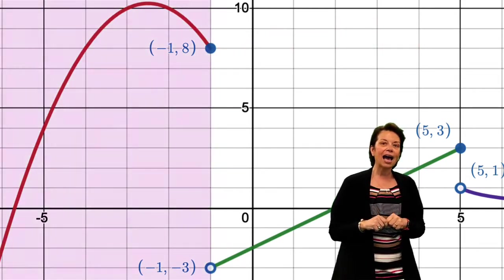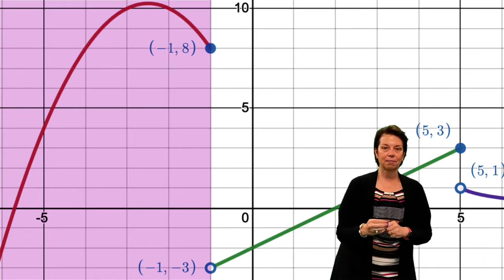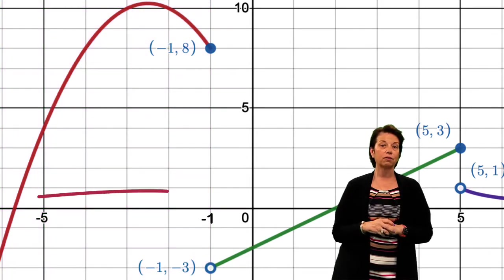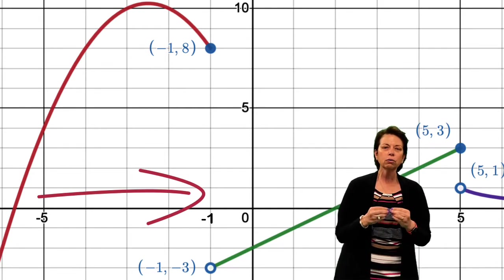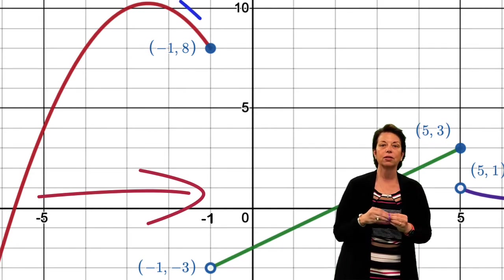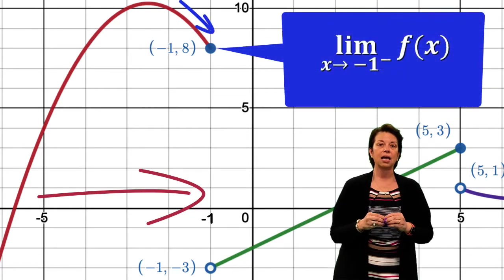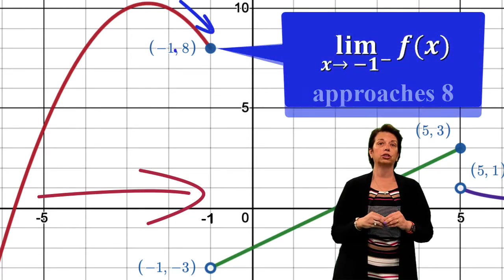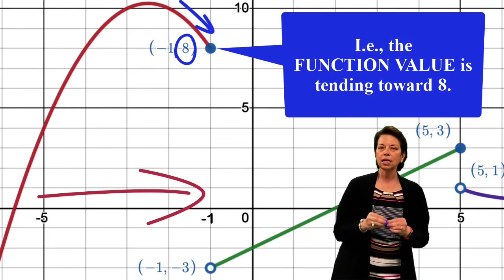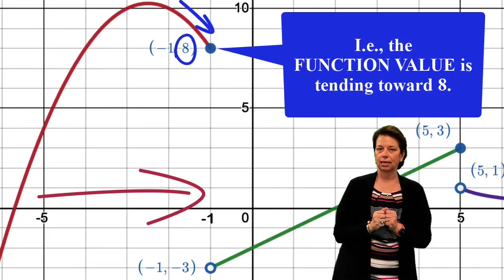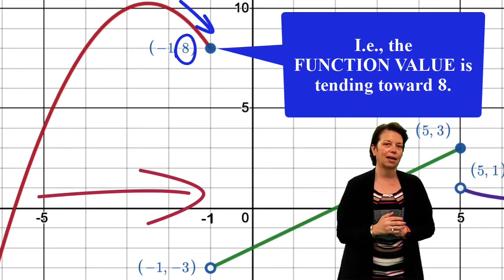So let's take a look at the left side. As we imagine taking the limit as x approaches negative 1 from the left side, we can see as we approach and get closer and closer to negative 1 on the left side, we see the value, the limit here in this case, approaching 8. So the function value itself is tending towards 8 as x gets closer and closer to negative 1, but on the left side.